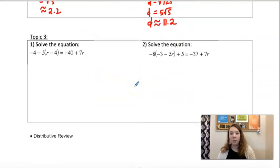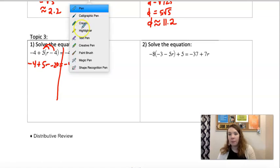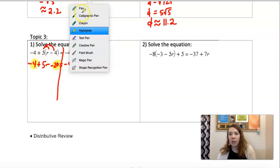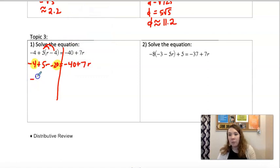Solve the equation. We did a lot of these in our warm-up last week. But you will want to distribute first. So that would give us 5r minus 20. Then we want to combine like terms.